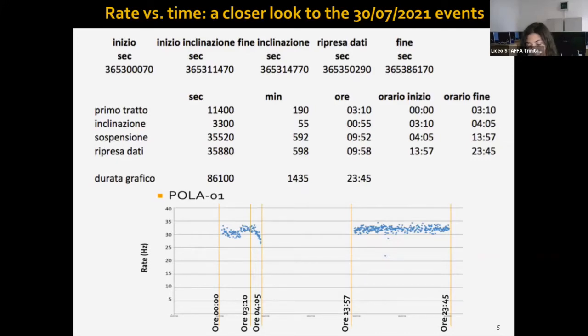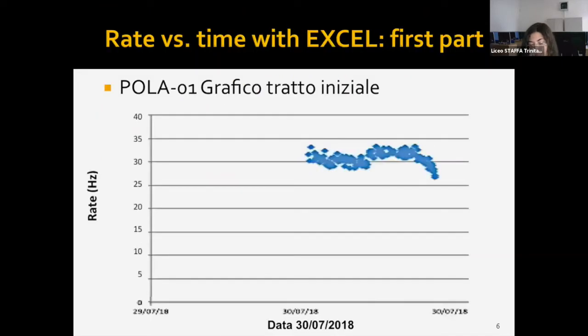This slide shows the calculation of the time intervals that made it possible to determine the starting time of the boat inclination, the time of the suspension of data tracking, and the time of its restart. As you can see, the inclination phase begins at 3:10 a.m. The Polar-01 is switched off at 4:05 a.m. and data resumes at 1:57 p.m. In this plot, the first stretch is isolated where the decline phase is evident. I will pass it over to Alessandra.